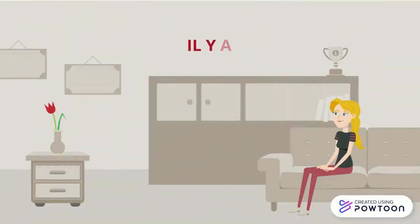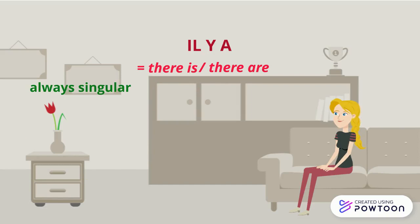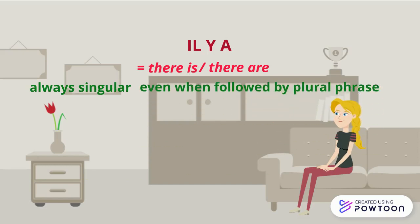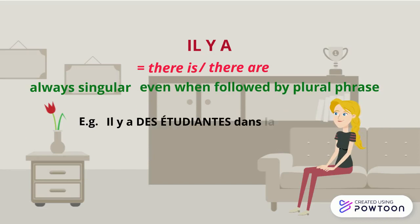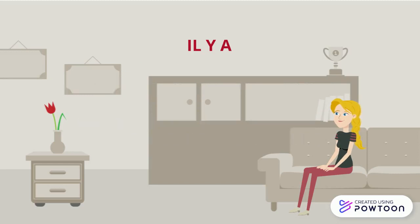The impersonal structure il y a means there is or there are. Note that it is always singular in French, even when it is followed by a plural phrase. For instance, il y a des étudiantes dans la classe (there are some students in the classroom).